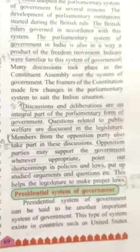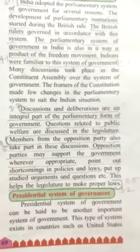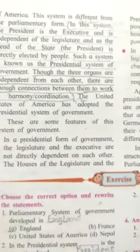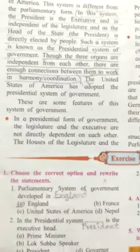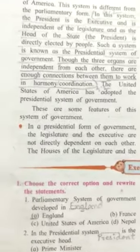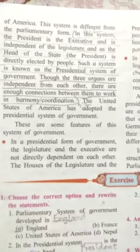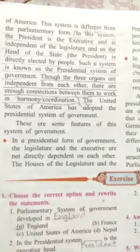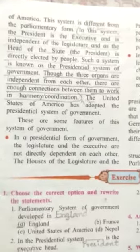Next we will see the presidential system of government. The presidential system is another important system of government, which exists in countries such as the United States of America. This system is different from the parliamentary form. In this system, the president is the executive and is independent — no legislature can impose any rules on the government. Though the three organs are independent from each other, they have enough connections between them to work in coordination.